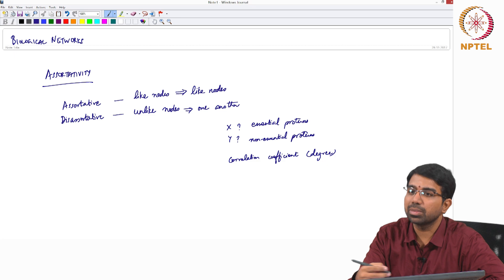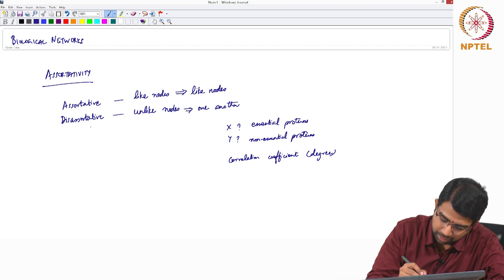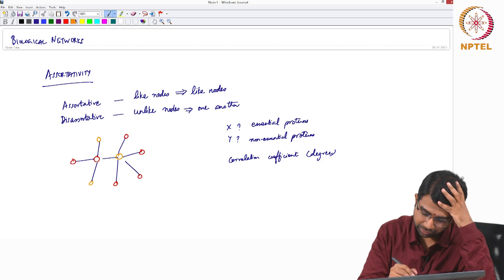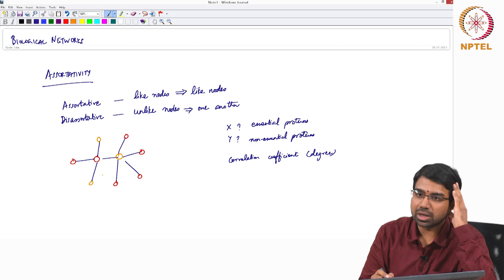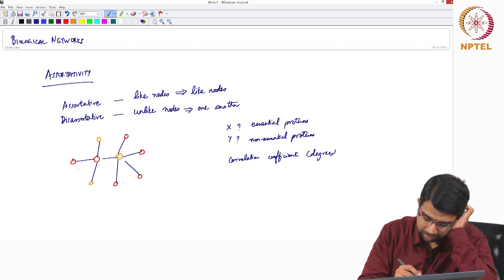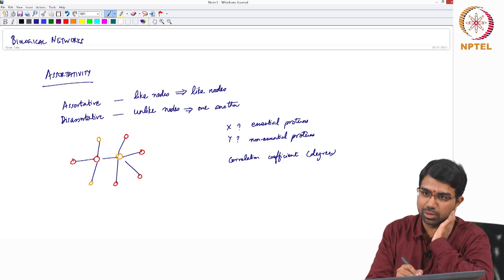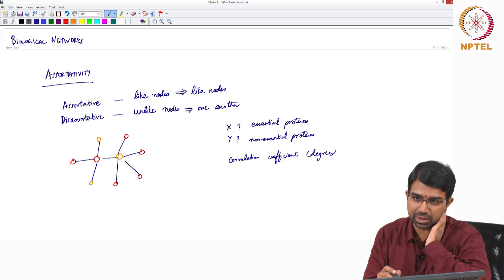As an extreme example, a bipartite graph is sort of perfectly disassortative. But if you take any general graph, something like this, in this graph you have nodes of two types, you have red nodes and orange nodes. And you see that predominantly nodes of different types connect to one another. You do have one red node connecting to a red node, so this is not a bipartite graph, but this is something that you would call more or less disassortative.